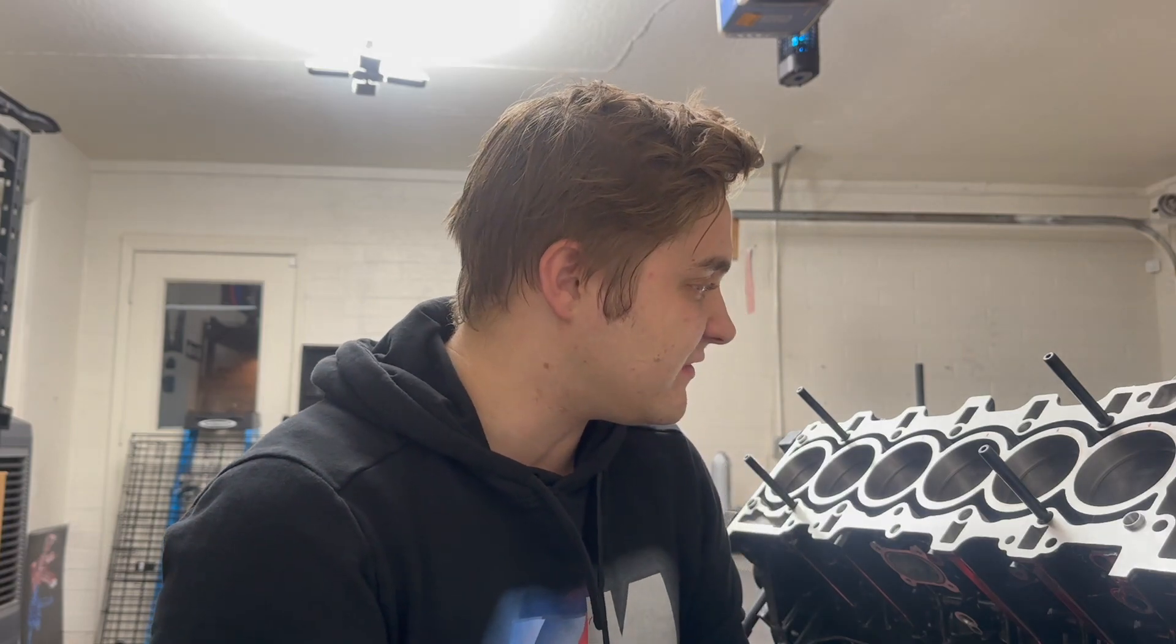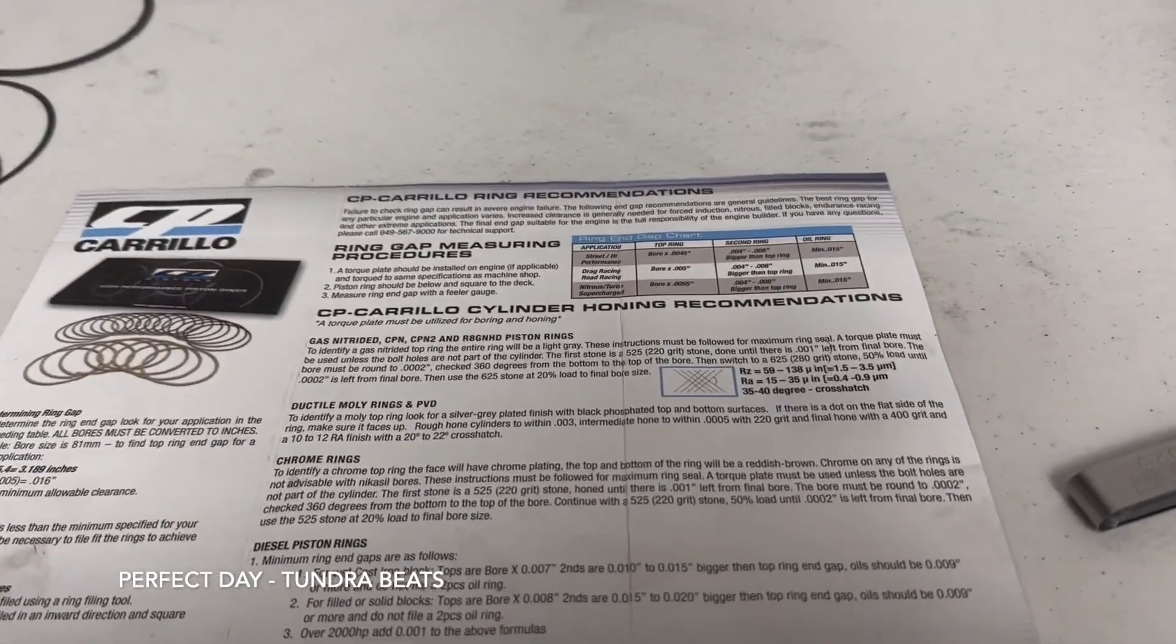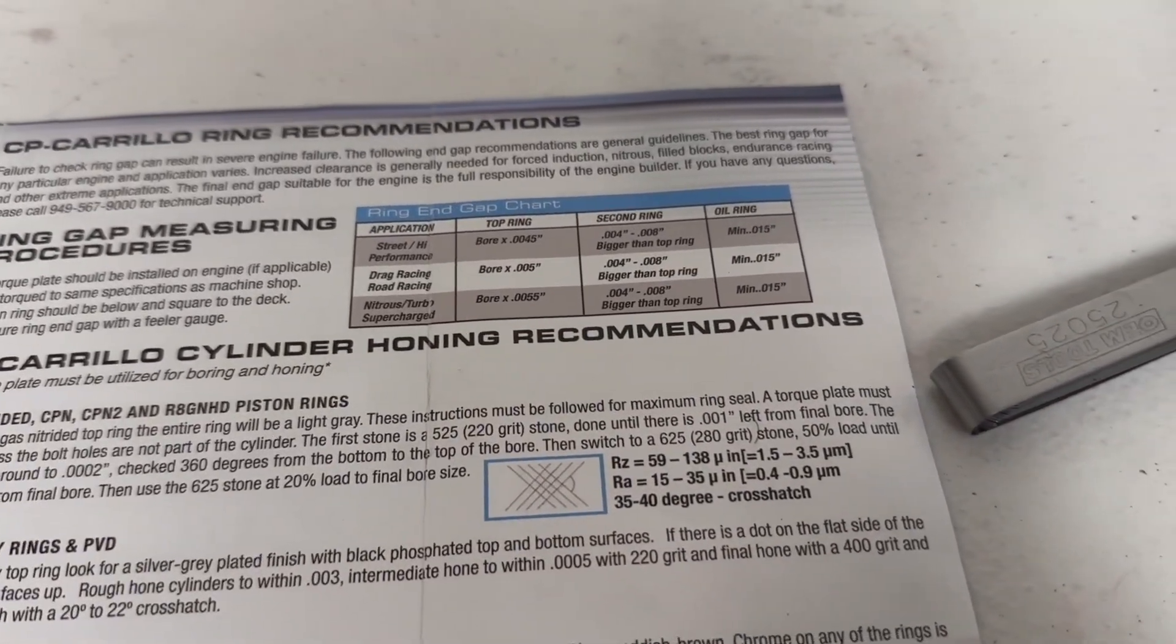In this video I am going to set my end gap clearances for my M54. I have all the rings in here already and then I got my ring grinder set up right here. I got my spec sheet, I already did my math according to this. I'm supposed to be at 18.2 thousandths so I'm gonna round up to be safe and set them at 19 or like 18 or 19.